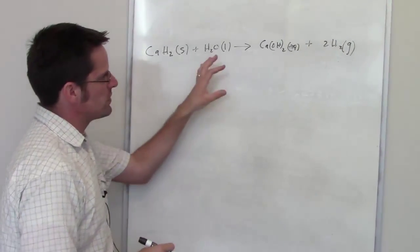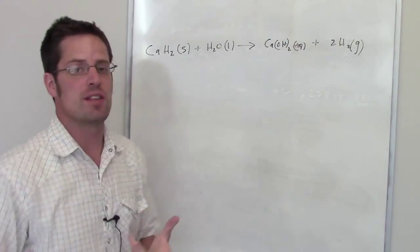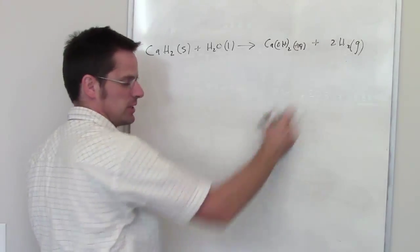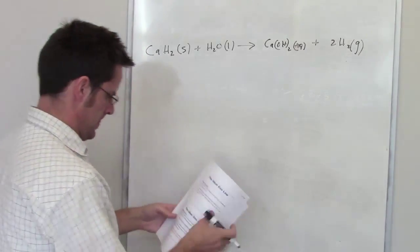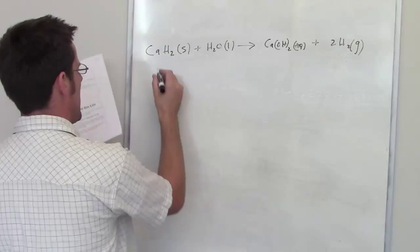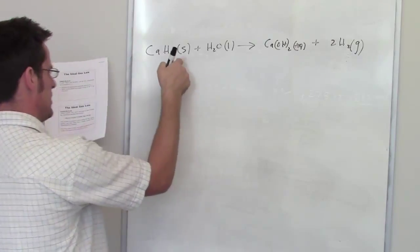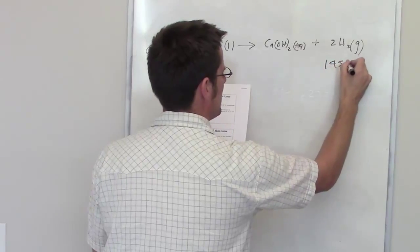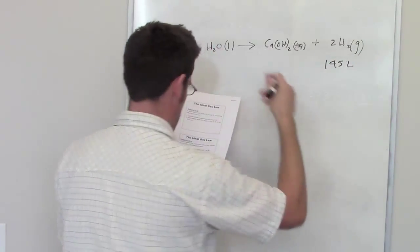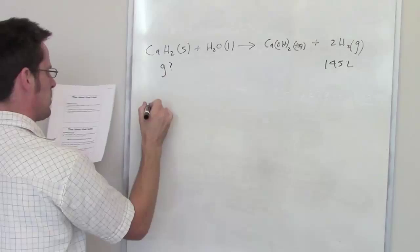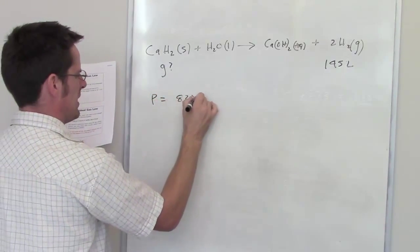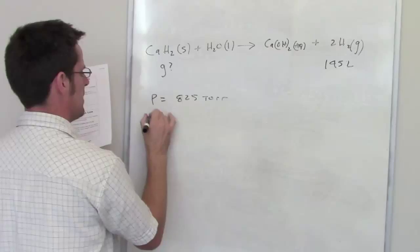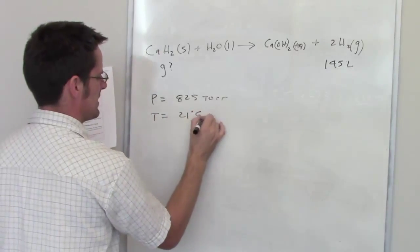This question tells us that when we run this reaction, and I've actually run this reaction in the lab before, it produces hydrogen gas. So it asks us how many grams of this calcium hydride are needed to generate 145 liters of hydrogen gas if my pressure is 825 torr and my temperature is 21 degrees Celsius.